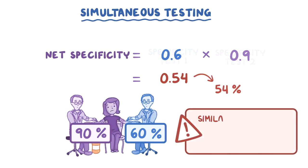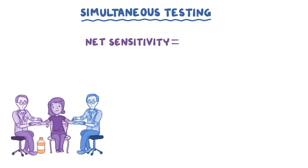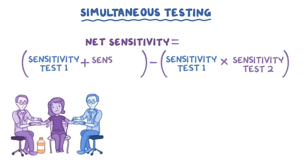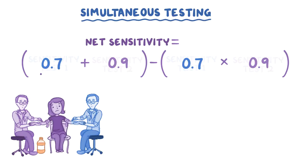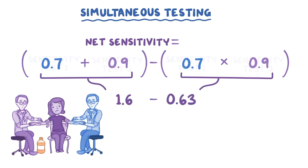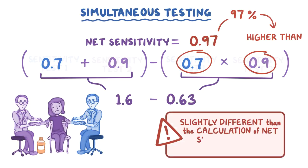One important thing to notice is that this equation is similar to the one used to calculate net sensitivity for sequential testing — except in sequential testing the two sensitivities were multiplied, and in simultaneous testing the two specificities are multiplied. The net sensitivity of two simultaneous tests is calculated by adding the sensitivities from each test and then subtracting their product. For example, if the first test's sensitivity is 70% (0.7) and the second test's sensitivity is 90% (0.9), the calculation is 0.7 + 0.9 − (0.7 × 0.9) = 1.6 − 0.63 = 0.97, or 97% — higher than the sensitivities of each individual test.